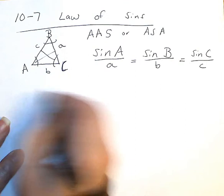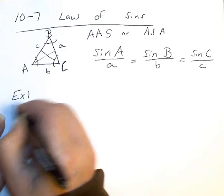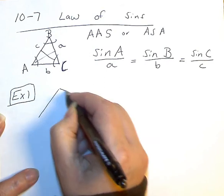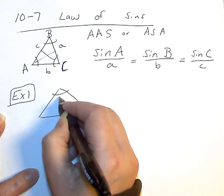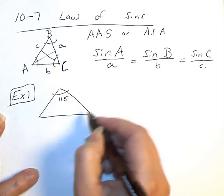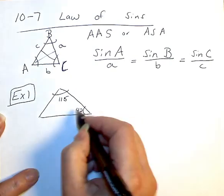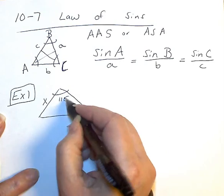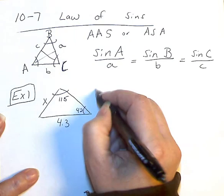All right, example one. We start with a triangle. And this up here is 115. Down here is 42. Across from 42 is X. And across from 115 is 4.3. And we are going to find X.